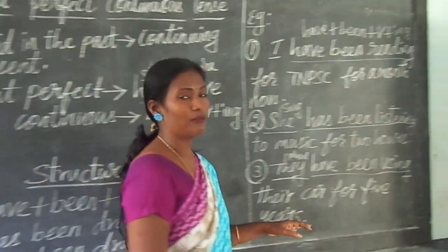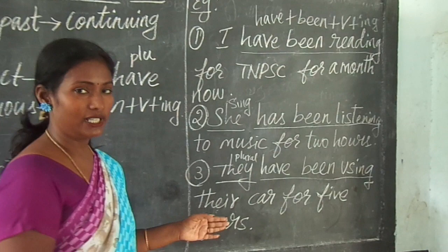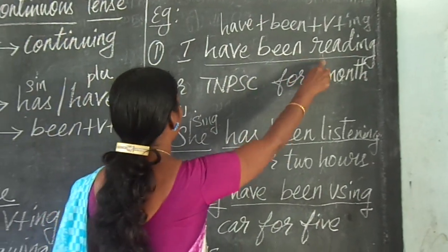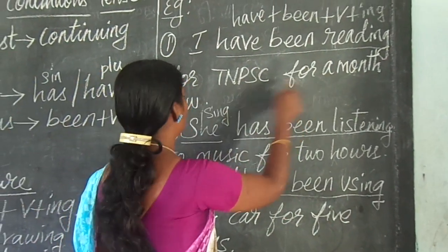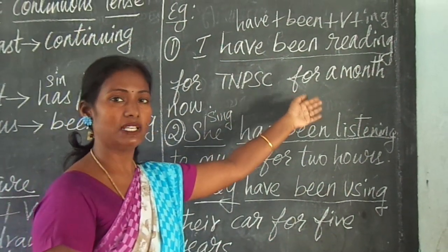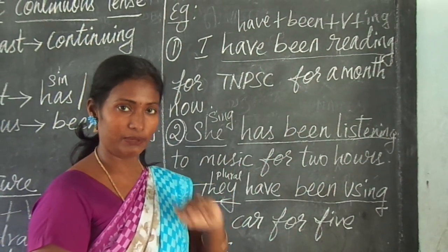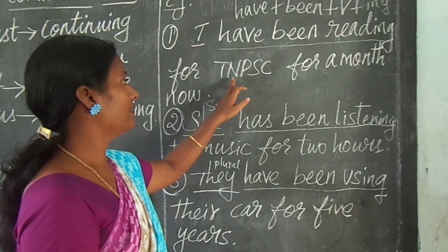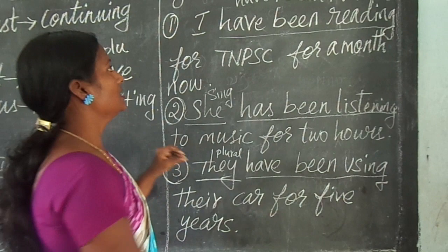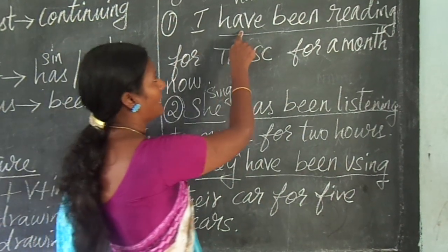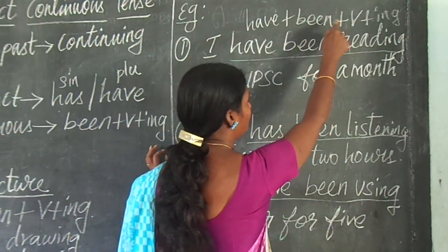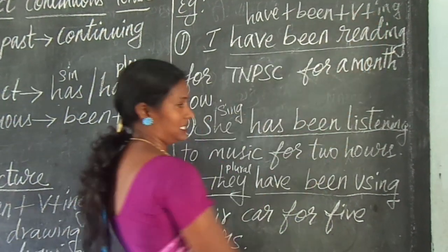So we shall see some more examples here, which will be very clear for us. 'I have been reading for TNPSC for a month now.' So they have started reading for TNPSC a month ago, but still they are preparing for it, and so they have expressed this in the present perfect continuous tense. Here the structure is: have plus been plus verb plus ing.